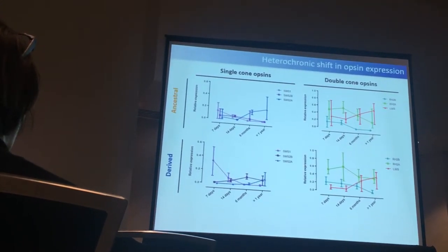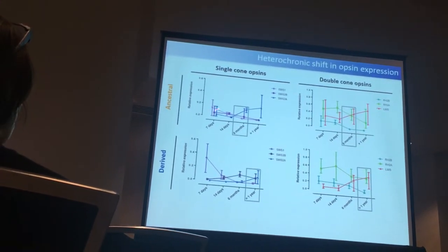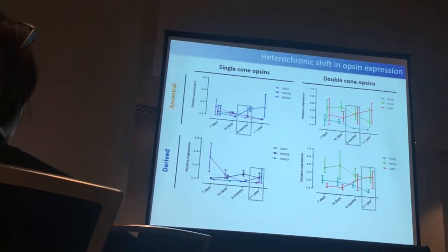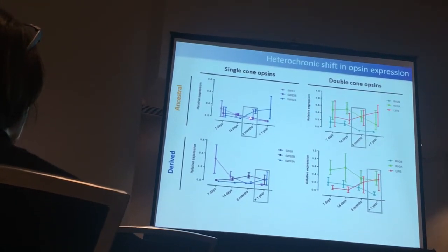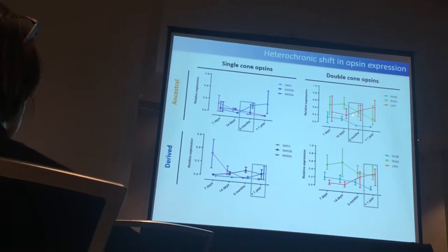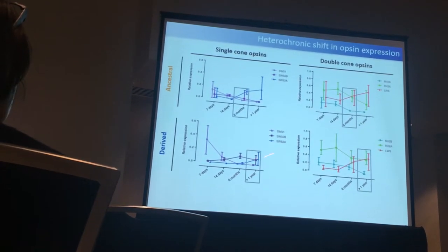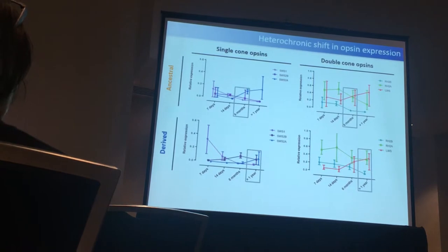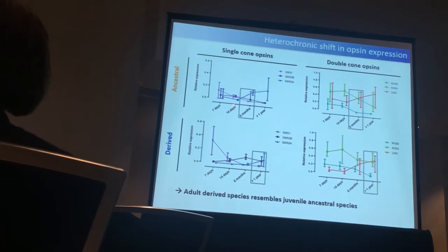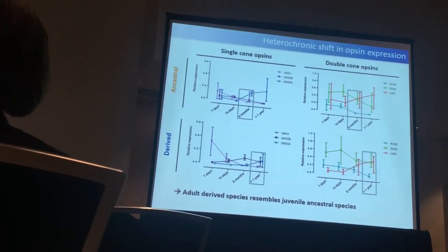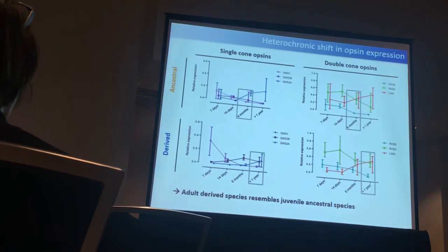In the derived species, it first looks quite similar, but I want to focus on two time points: six months in the ancestral species, and more than one year in the derived species. At six months in the ancestor, SWS2B and SWS2A are expressed in single-cones, and RH2A and LWS at equal proportions in double-cones. This is exactly what we see in the derived species at a much older age. So the opsin expression phenotype of the derived species at one year resembles a juvenile state of the ancestral species — the derived species is a kind of pedomorphic version of the ancestor.